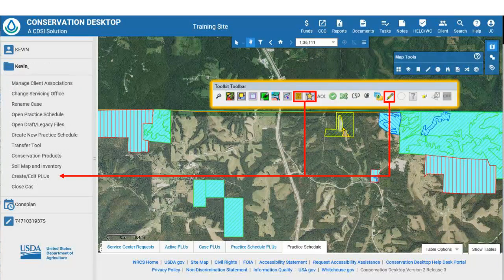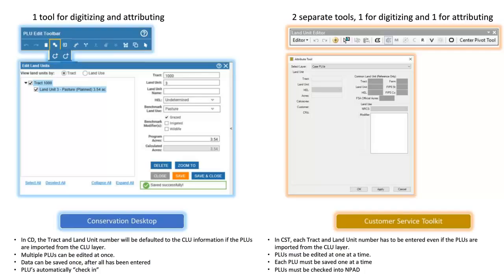In Conservation Desktop, creating, attributing, and editing planned land units is done using the Create Edit PLUs function under the Case File panel. In Desktop, one tool is used for creating, editing, and attributing land units, whereas in Toolkit, two tools are used. Additionally, in CD the tract and land unit number will default to the CLU information if PLUs are imported from the CLU layer. Multiple PLUs can be edited at once, data can be saved once after all has been entered, and PLUs automatically check in. In Toolkit, each tract and land unit number has to be entered manually even if PLUs are imported from the CLU layer, PLUs must be edited one at a time, each PLU must be saved individually, and PLUs must be checked into NPAD.